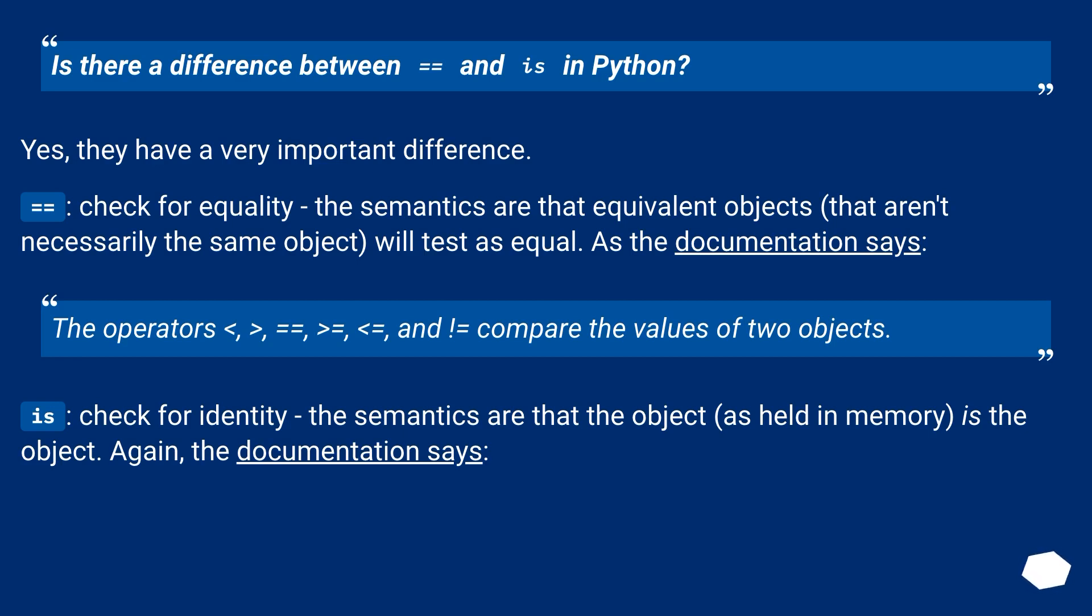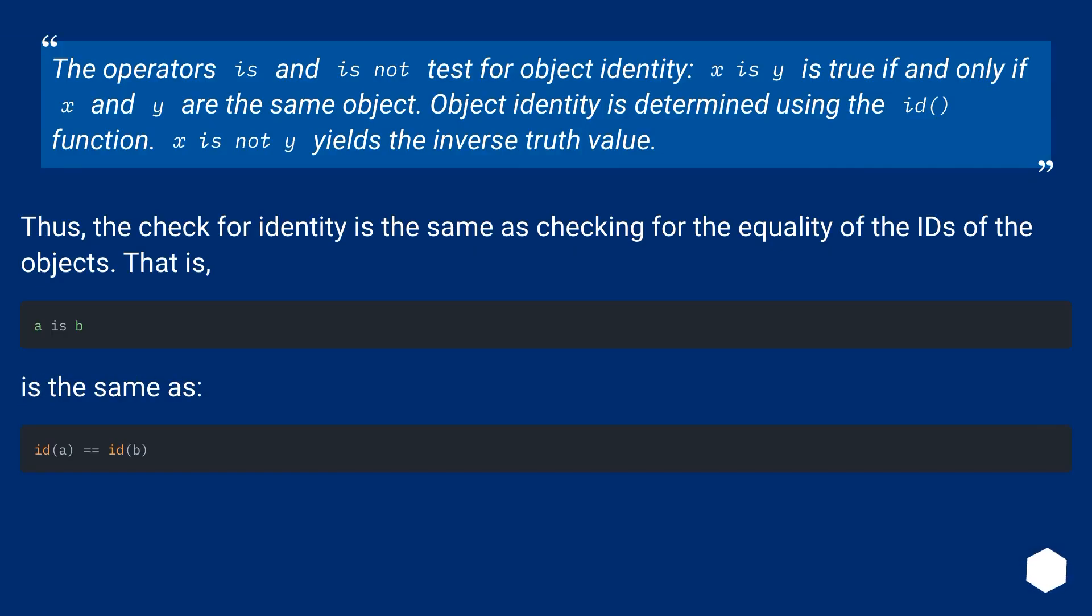Is checks for identity, the semantics that the object as held in memory is the object. Again, the documentation says the operators is and is not test for object identity. x is y is true if and only if x and y are the same object. Object identity is determined using the id function. x is not y yields the inverse truth value.